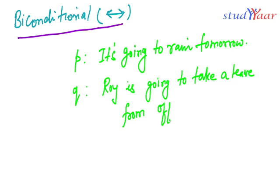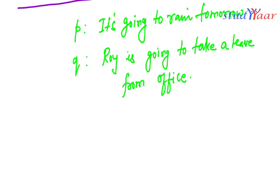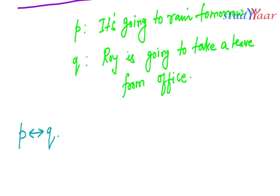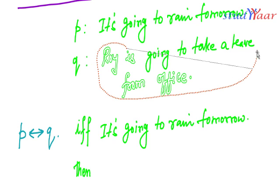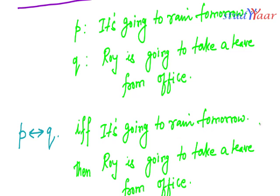Combining P and Q using a bi-conditional, I write P if and only if Q, also written as 'iff.' This means: if and only if it's going to rain tomorrow, Roy is going to take a leave from office.